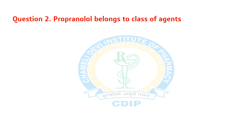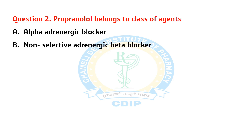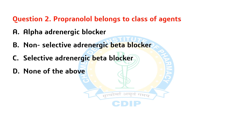Question 2. Propranolol belongs to which class of agents? A) Alpha-adrenergic blocker. B) Non-selective adrenergic beta blocker. C) Selective adrenergic beta blocker. D) None of the above. Answer: B. Non-selective adrenergic beta blocker.